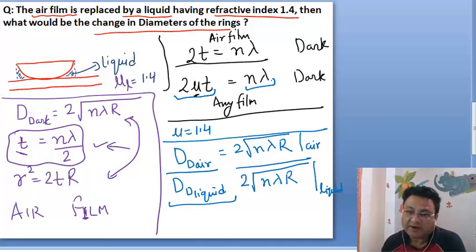Here is liquid. n lambda - actually, lambda is replaced by lambda by mu. In the condition, we have lambda air and lambda liquid, so I will put the subscript here.